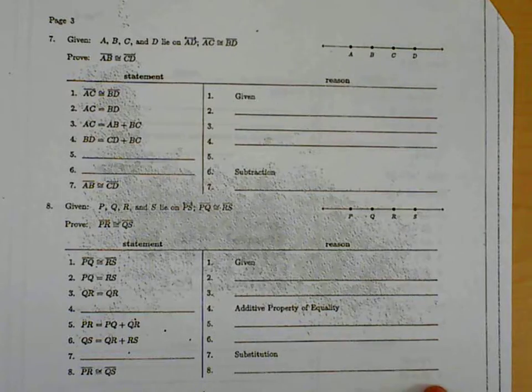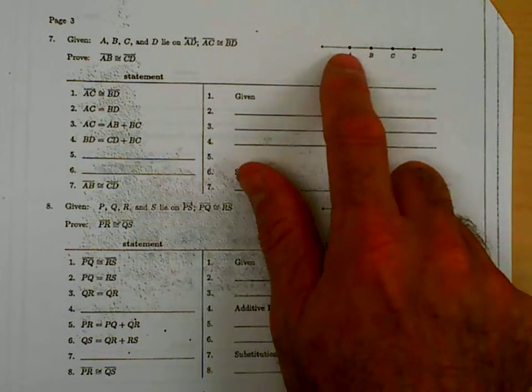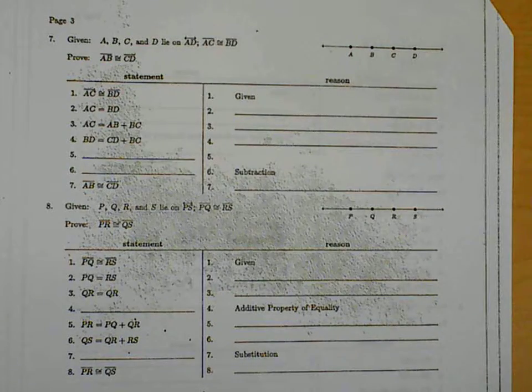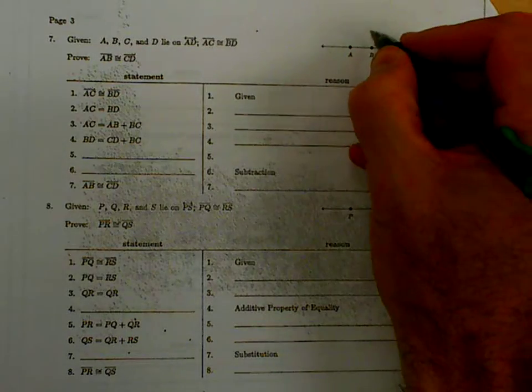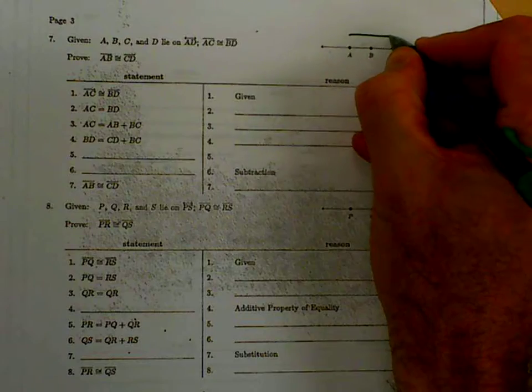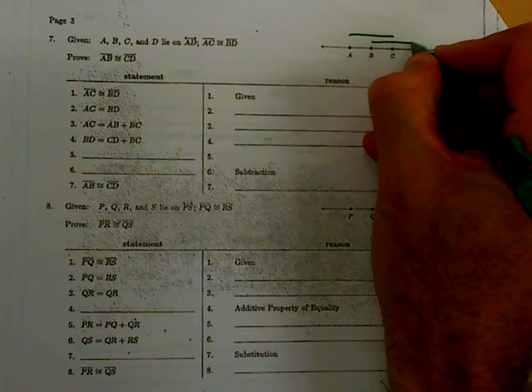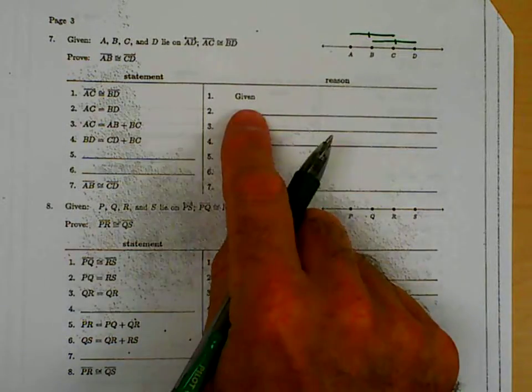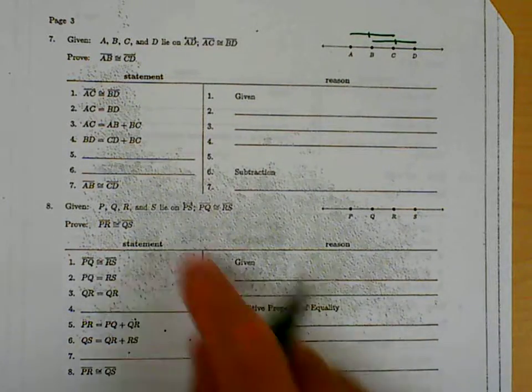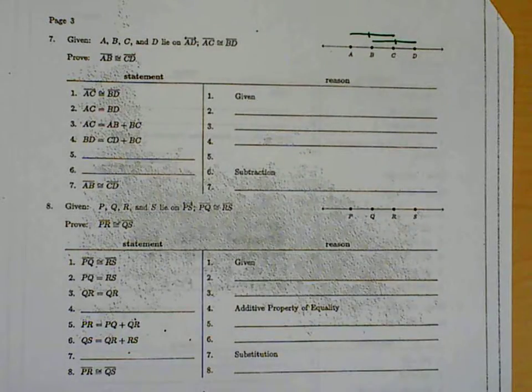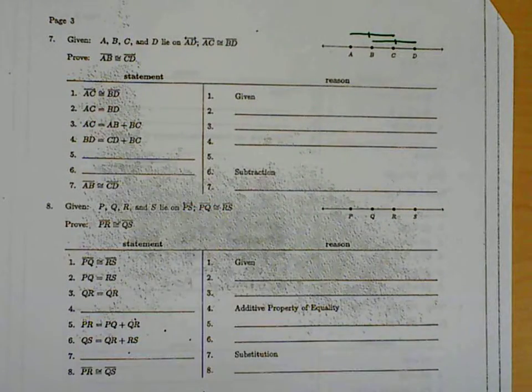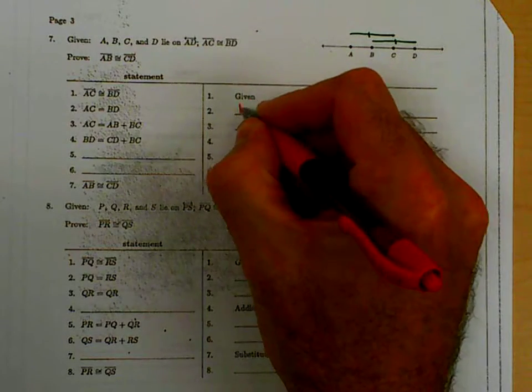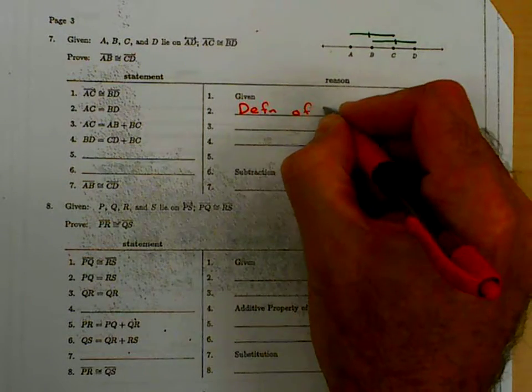Again, we're given ABCD. All are on this line. And they also tell us a congruency. They tell us that AC is congruent to BD. That's congruent to that. And that was given. Now if they give you the segments are congruent, and then they say the segments are equal, that's the definition of congruency.